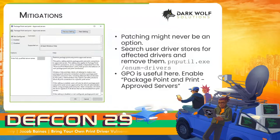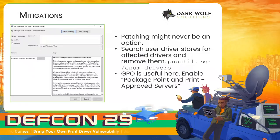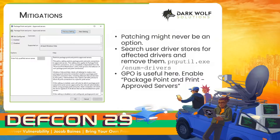One of the challenges with mitigations is I doubt this will ever see any real patch. Installing a printer is meant to use these mechanisms. So I think the best you can do is just ensure that the affected drivers aren't on your systems already, and then enable the package point and print approved servers in GPO. Of course, that will make it very difficult for your end users to add printers. That's sort of the entire issue — printers can't be trusted.